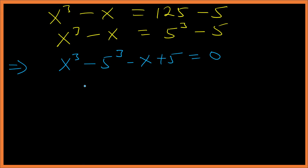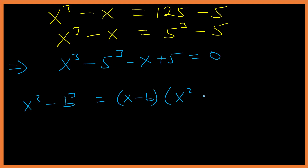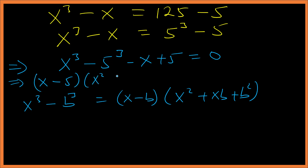Now, using the difference of cubes identity: a³ - b³ = (a - b)(a² + ab + b²). Applying this gives us (x - 5)(x² + 5x + 25) - (x - 5) = 0.